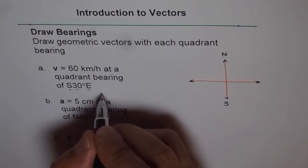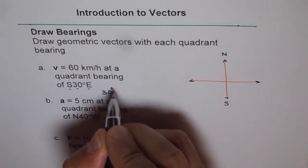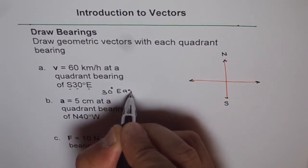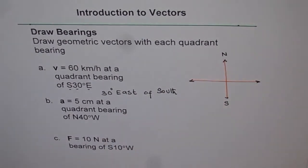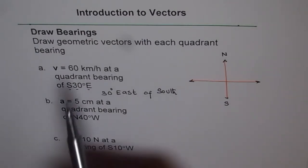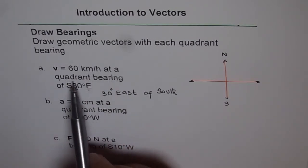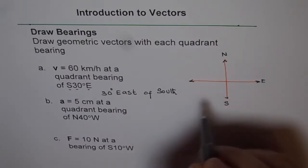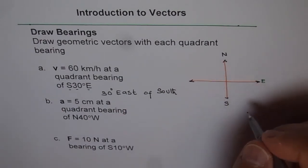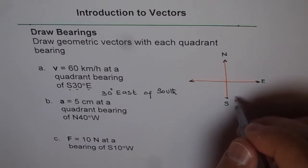We read S 30° E as 30 degrees east of south. That is how it is to be read and understood. This will now help us sketch our vector. The vector given is 60 kilometers per hour at a quadrant bearing of 30 degrees east of south — so we have to move east from south by 30 degrees. That is what it means. I am making an approximate sketch here, but I recommend you use a protractor to draw the angles and a scale.